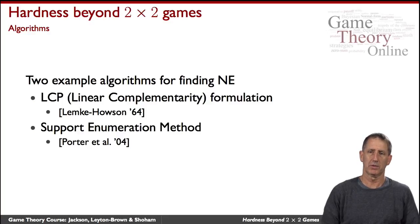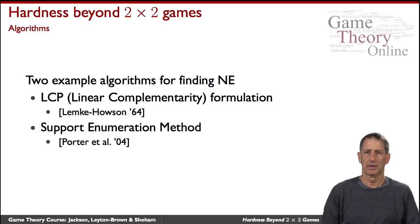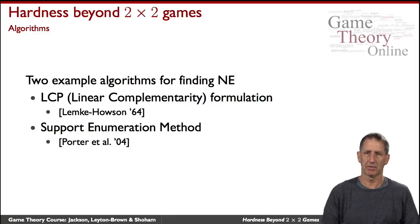One of them starts with a mathematical formulation of the problem called a linear complementarity problem, and once you set it up as a mathematical optimization problem, you can apply various algorithms to that. The most famous one for two-player games is due to Lemke and Howson. This is an algorithm that really displays a deep understanding of the mathematical structure of what a game is and the nature of Nash equilibrium.